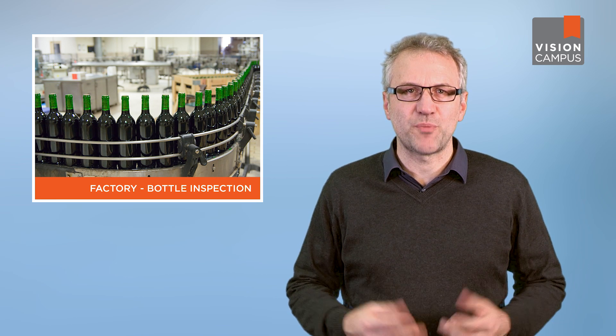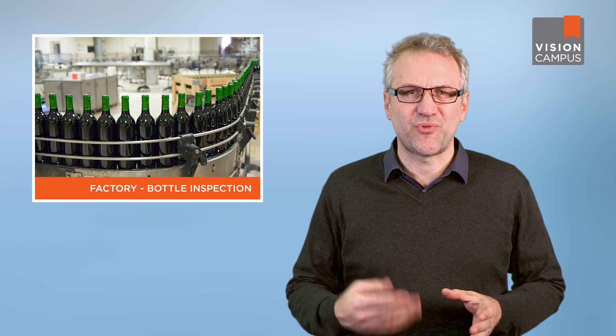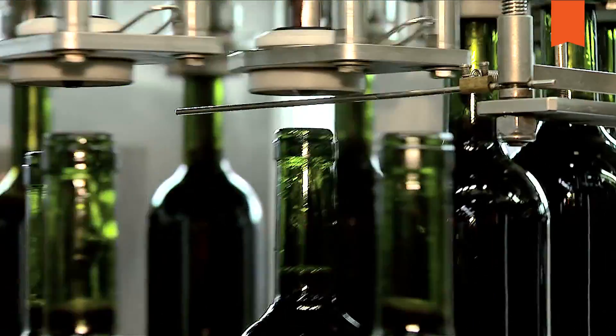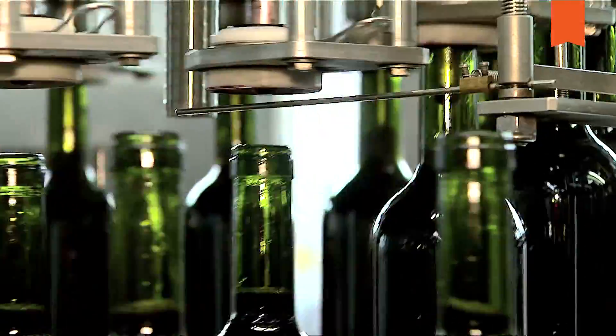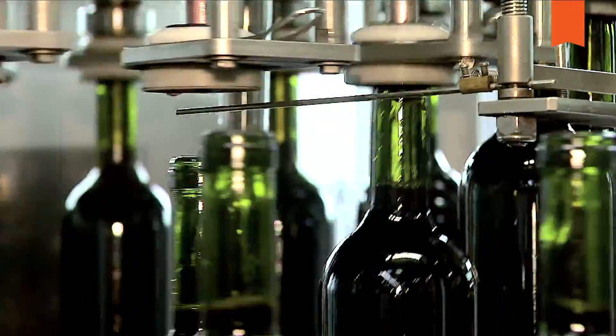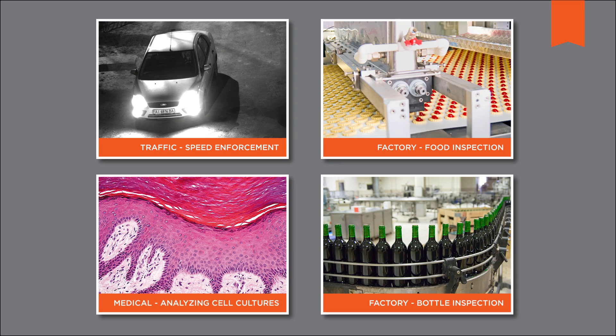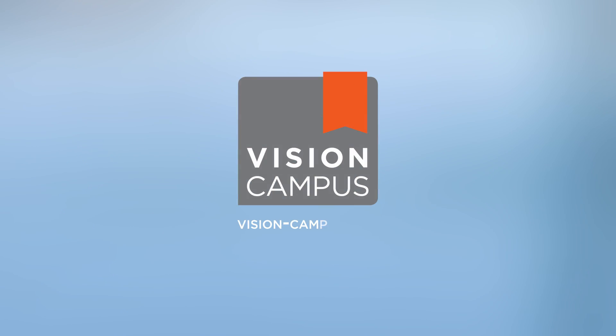A bottle inspection system can have different purposes: you can inspect the fill level, detect foreign particles in a bottle, or check the capping. CMOS image sensors continue to be at an advantage here since the application demands very high frame rates. In most systems more than 60,000 bottles per hour must be inspected, sometimes even up to 90,000 bottles per hour. These practical examples show that cameras with CMOS image sensors are the optimal choice for many different applications.